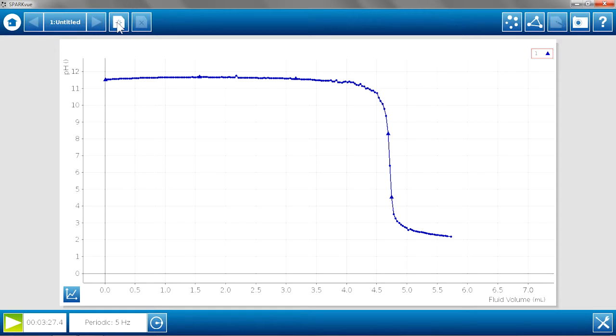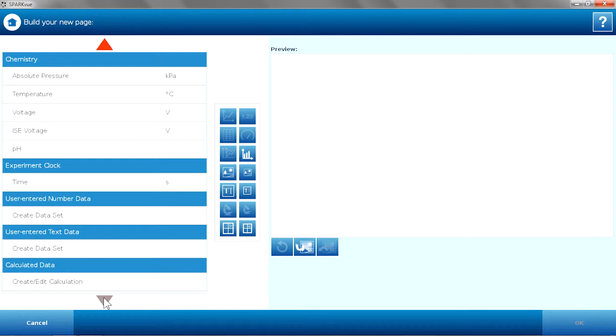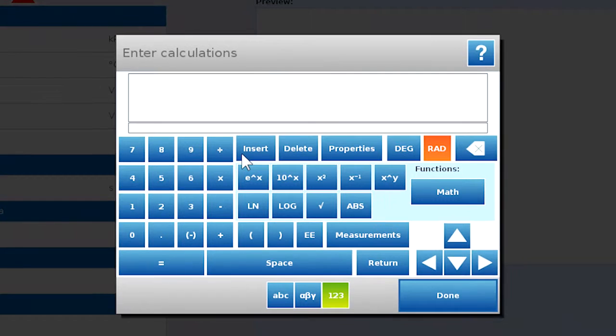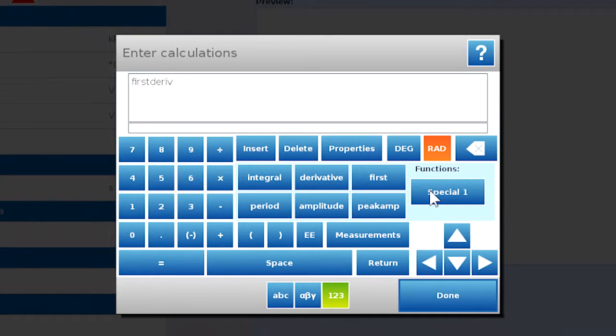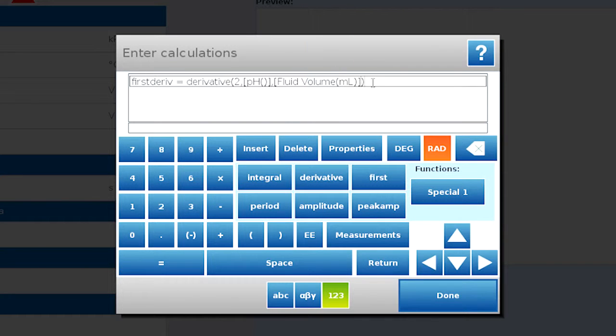One great way to analyze a titration is to look at the second derivative. So I'm actually going to build a new graph that includes the second derivative of the pH. I'm going to build a page, go to calculated data, and I'm going to do my first derivative with one of the math functions. And it's going to be a derivative of my measurement of pH versus fluid volume.